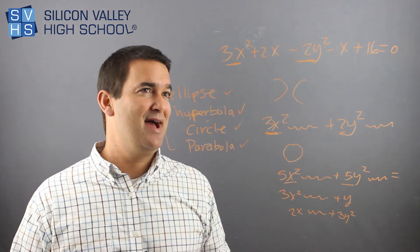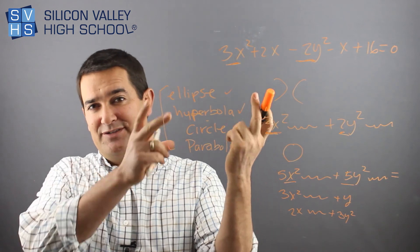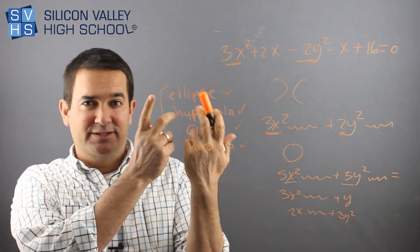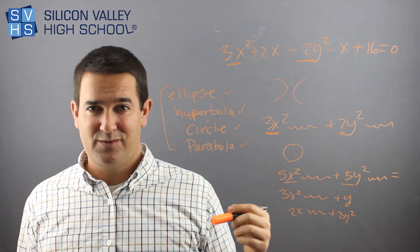So don't do any math. This is the best trick in the world. Just look at it and you'll know immediately based on if the halves are added or if the halves are subtracted. And then in the case of a parabola, it's a slam dunk. Only one guy is squared. And that's it.